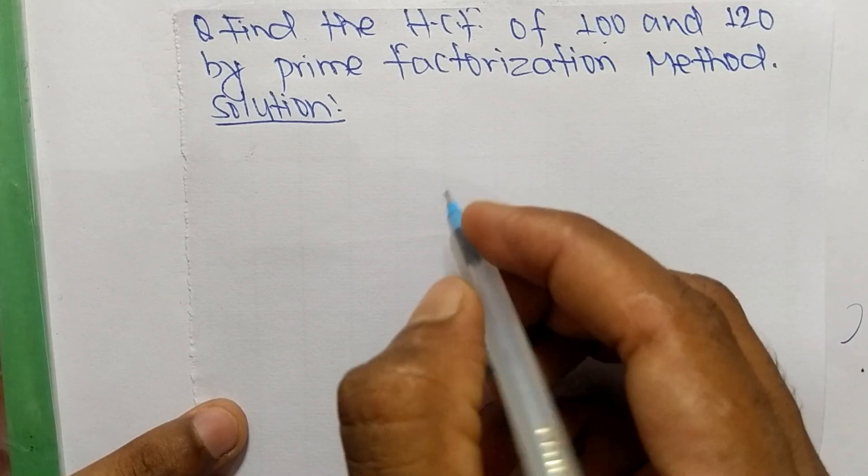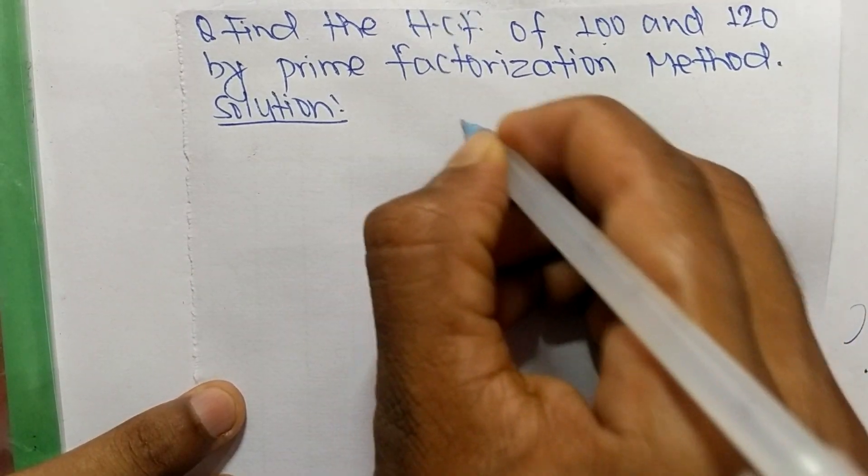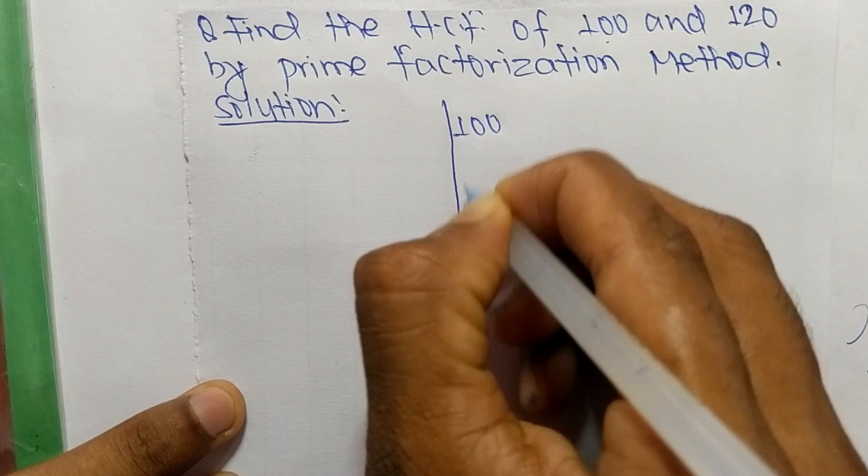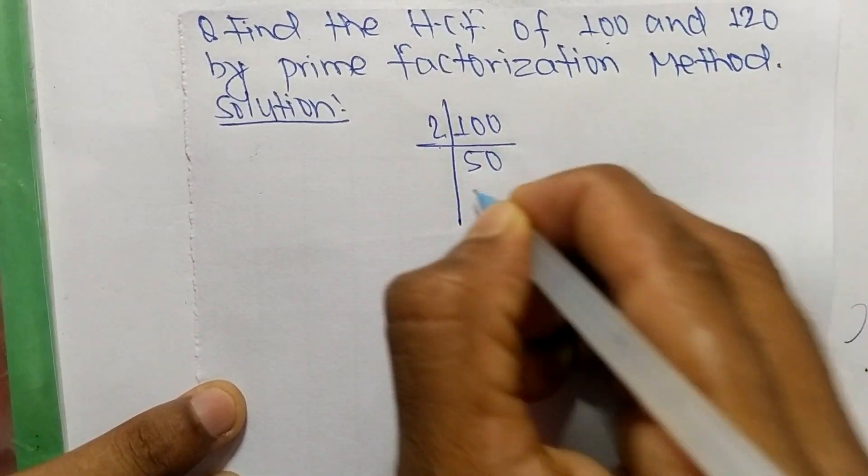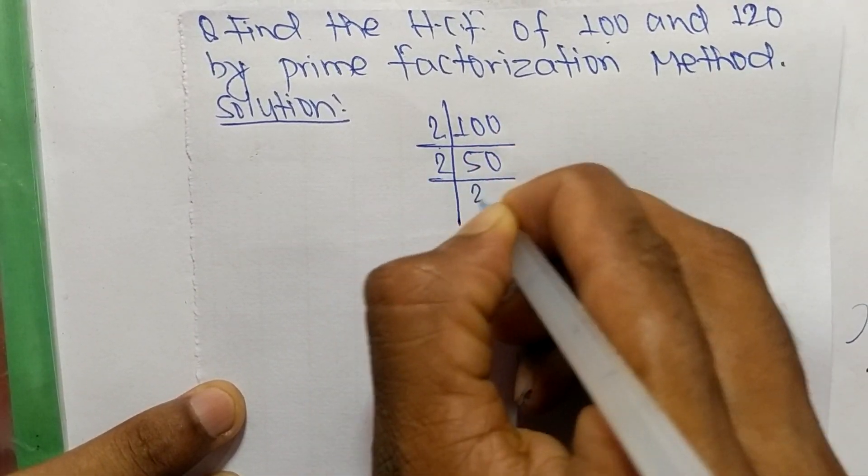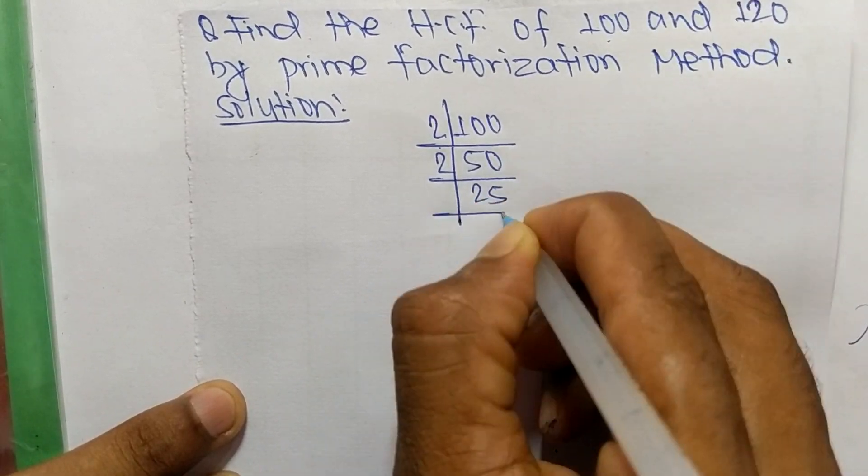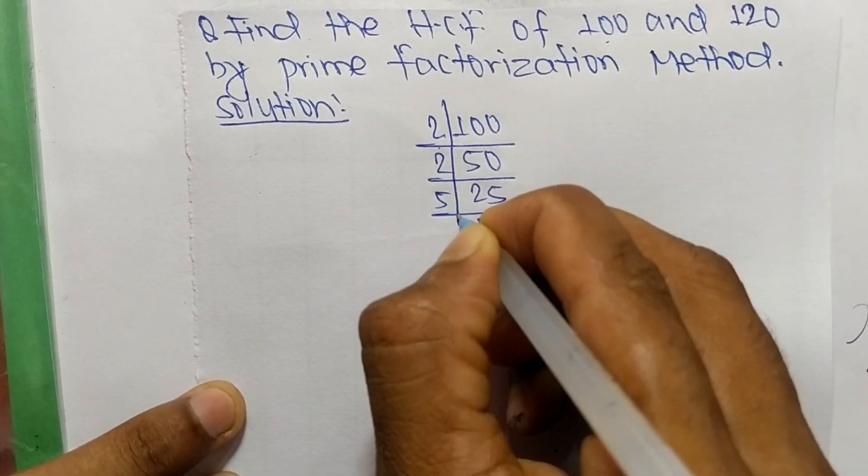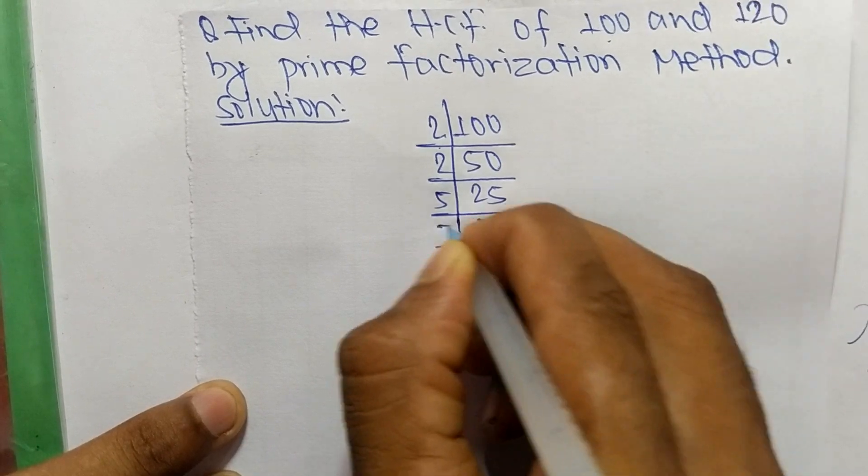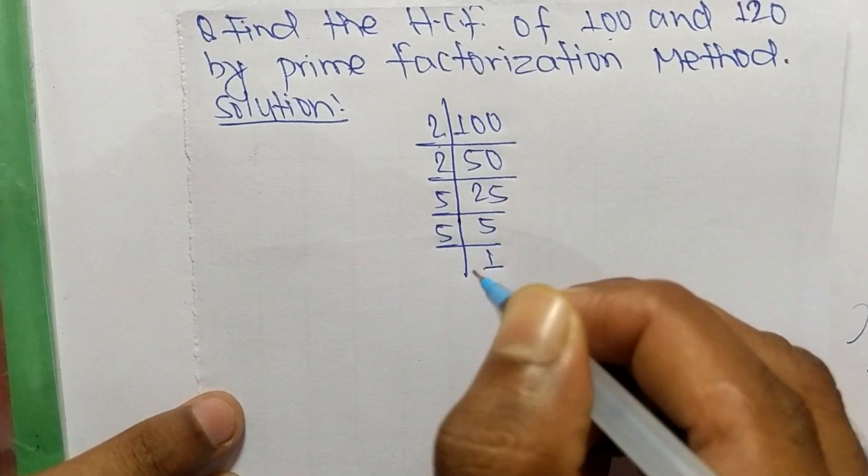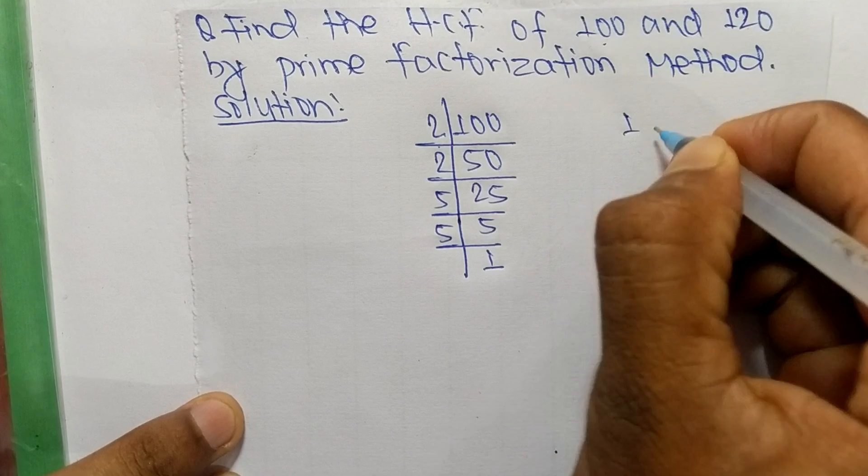So first we find out the prime factors of 100. So it is 2 times 50 equals 100, 2 times 25 equals 50, 5 times 5 equals 25, and 5 times 1 equals 5.